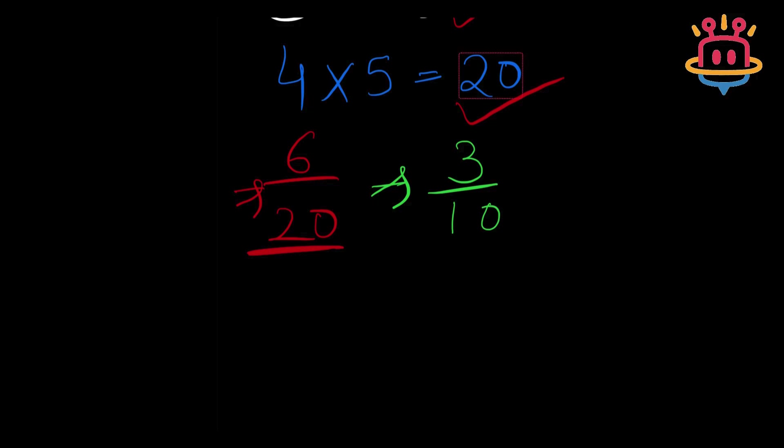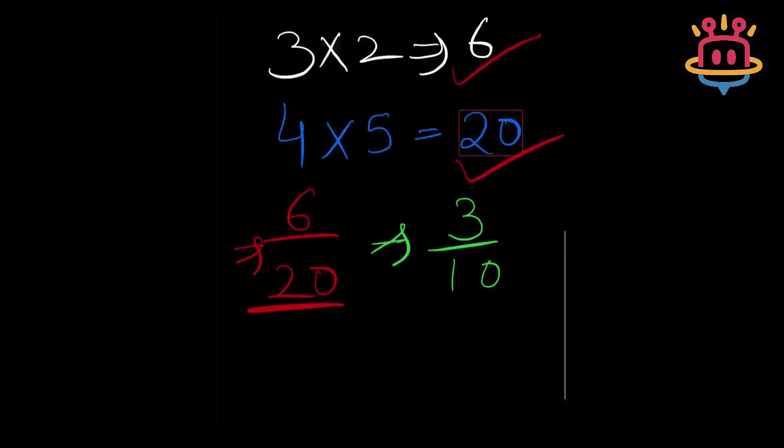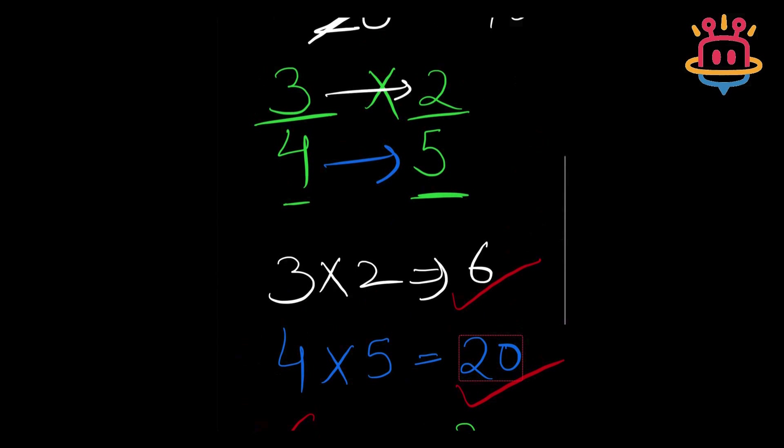Boom, done in less than 5 seconds. No need for common denominators, just multiply top and top, bottom and bottom, then simplify and get your answer. This trick actually works for any fraction multiplication.